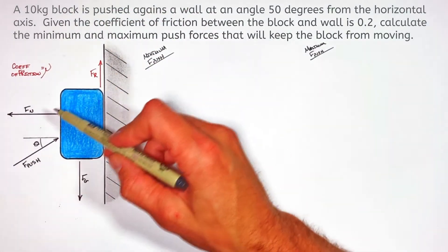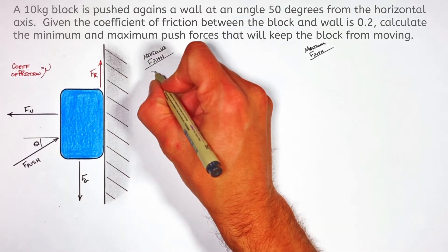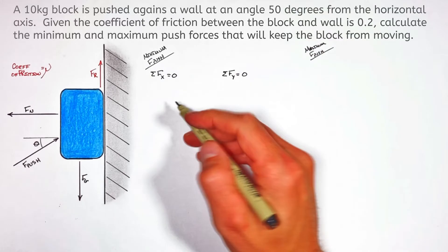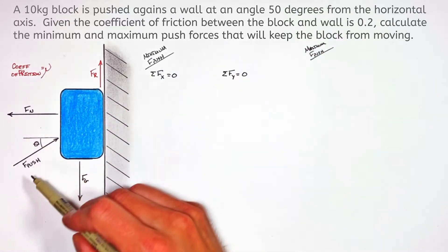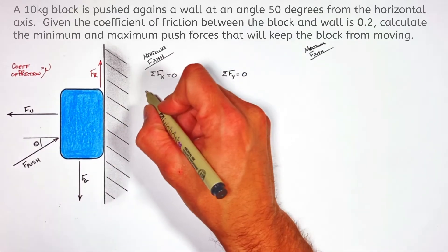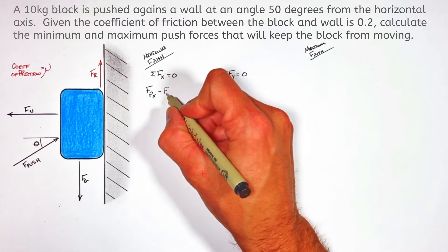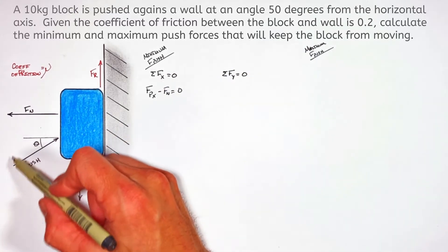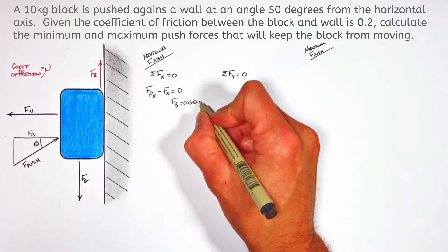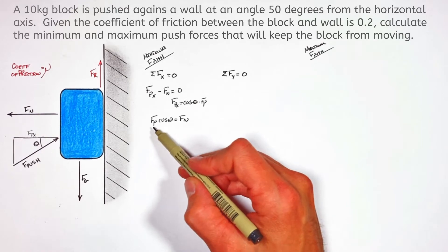We've got four forces acting on the block, so we plug them into Newton's second law in both the x and y axes. Because the block is stationary, the sum of all forces in each axis is zero. Looking at the horizontal axis, taking rightward as positive, the horizontal component of the push force minus the normal force equals zero. The horizontal component of the push force is fp·cos(θ), so the normal force equals fp·cos(θ).